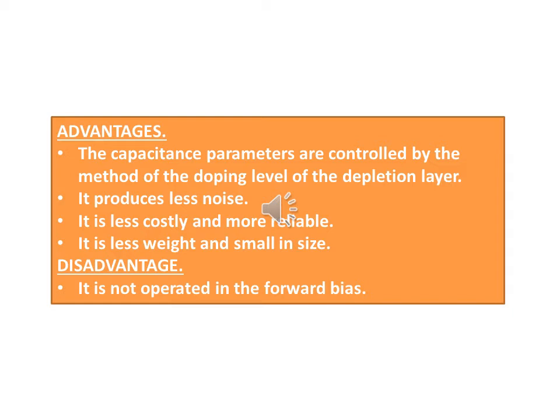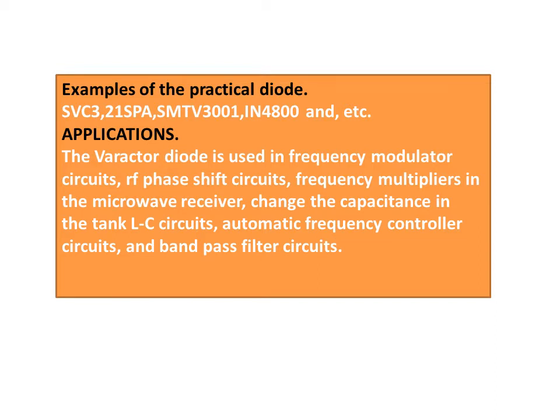It is small in size. Disadvantages: It is not operated in forward bias. Examples of practical diodes include SVC3-21, SPA-SMT, V-3001, IN4800, and others. Applications: The Varactor Diode is used in frequency modulator circuits, phase shift circuits, frequency multipliers in microwave receivers, to change capacitance in LC circuits, automatic frequency controller circuits, and band-pass filter circuits.